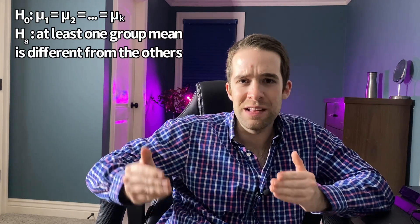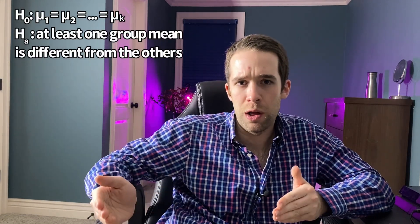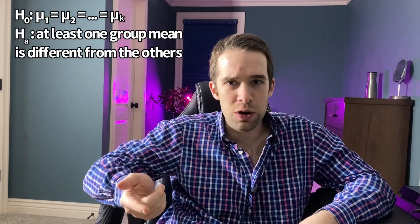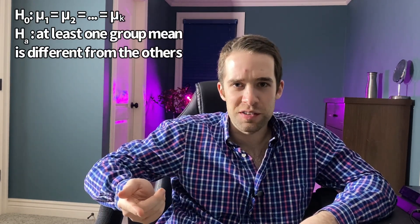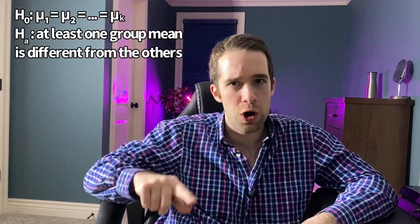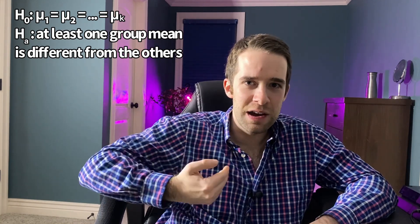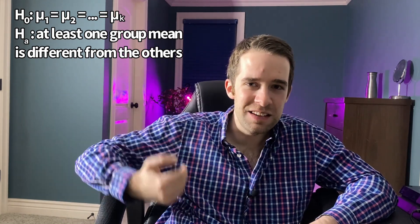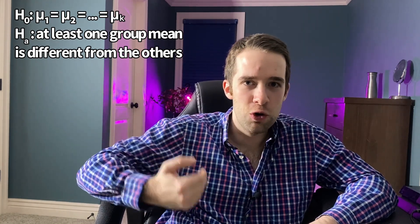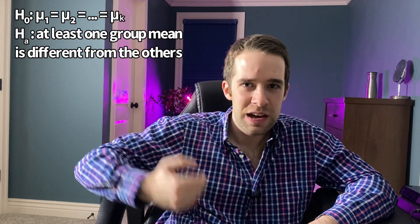We begin with a null hypothesis that all of the group means are equal. The alternative hypothesis is the logical contradiction of that — that is, at least one of the group means is different from all of the others.